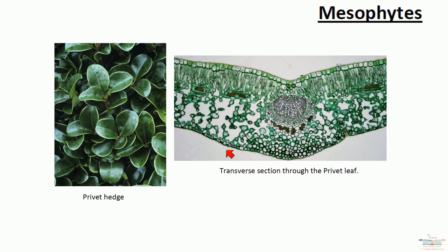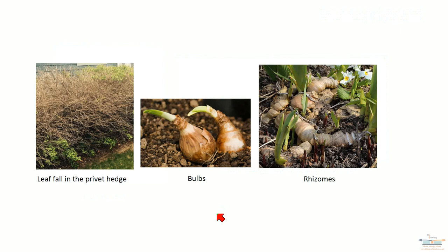The next adaptations are ones that the privet hedge doesn't do, but other plants do. The privet hedge undergoes leaf fall in the winter months, and then in summer, autumn, and spring the leaves will grow back.